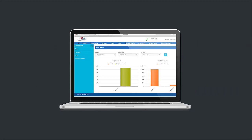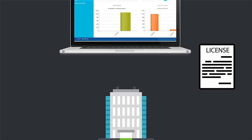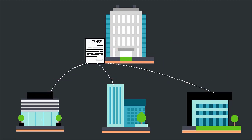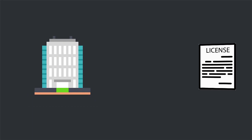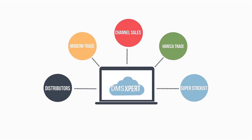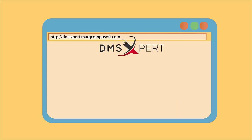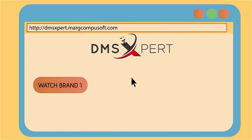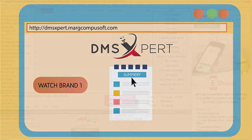You can sync data in DMS Expert in multiple ways. You can sync data on the basis of a license. If multiple branches of a company use only one license across multiple locations, you can sync data of multiple users with just one license. If there are multiple licenses in any corporate, you can sync their data as well. Even if there is just one shop with only one license, DMS Expert is still beneficial. In channel sales — with distributors, modern trade, Horeca trade, or super stockists — a corporate can club data of all locations at one place using DMS Expert panel.